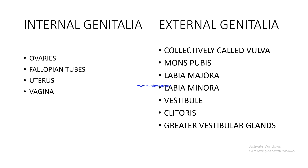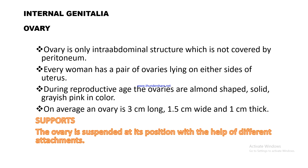External genitalia are collectively called the vulva, and include the mons pubis, labia majora, labia minora, vestibule, clitoris, and greater vestibular glands.